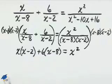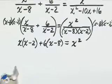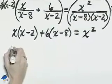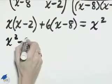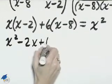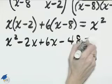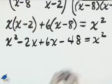Now, we can eliminate these parentheses on the left by using the distributive property. x squared minus 2x plus 6x minus 48 equals x squared.